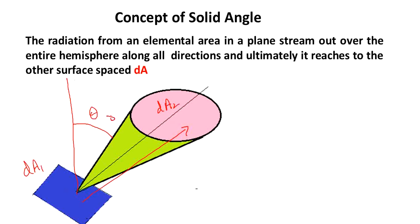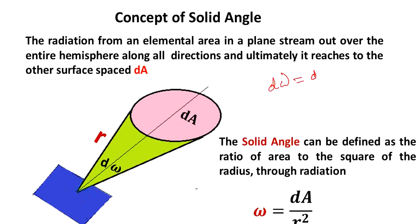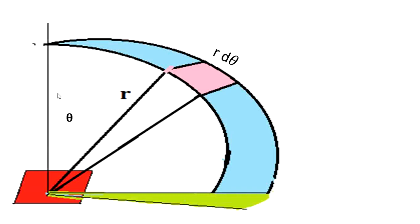It is emitting from dA_1 reaching dA_2 and having the radius r. The solid angle omega equals dA_2 divided by r^2. Then you can see this one in 3D space maintaining at angle theta.